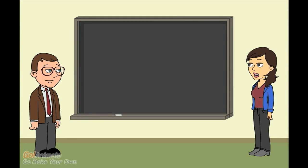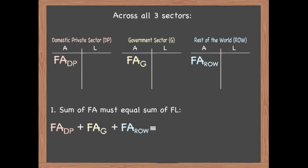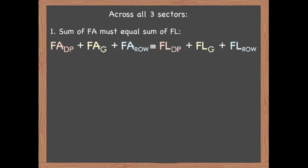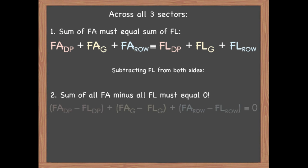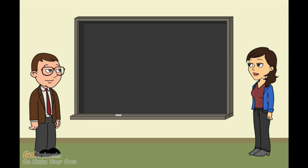Let's take a closer look at the three sectors together and how their finances are interrelated. Across all three sectors, the sum of financial assets must equal the sum of financial liabilities, as shown in the first equation. Subtracting the financial liabilities of each sector from both sides gives the second equation, illustrating that by aggregating across all three sectors, all financial assets and liabilities cancel each other out. Wait, could you explain that a bit more? Why do they sum to zero?